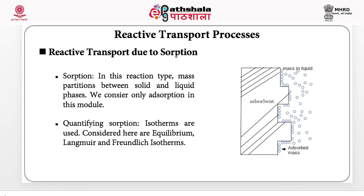Let me focus on sorption. Sorption is a reaction type in which mass partitions between the liquid phase and the solid phase. The solid phase is called the adsorbent, and mass can be seen attached to it. Sorption is basically not a reaction in which mass is chemically transformed, but it is partitioned. As the mass attaches to the adsorbent, the concentration of the particle in water goes down. There is also a process called desorption — the opposite of sorption — in which the adsorbed mass is released back to the water, causing the concentration in water to rise.